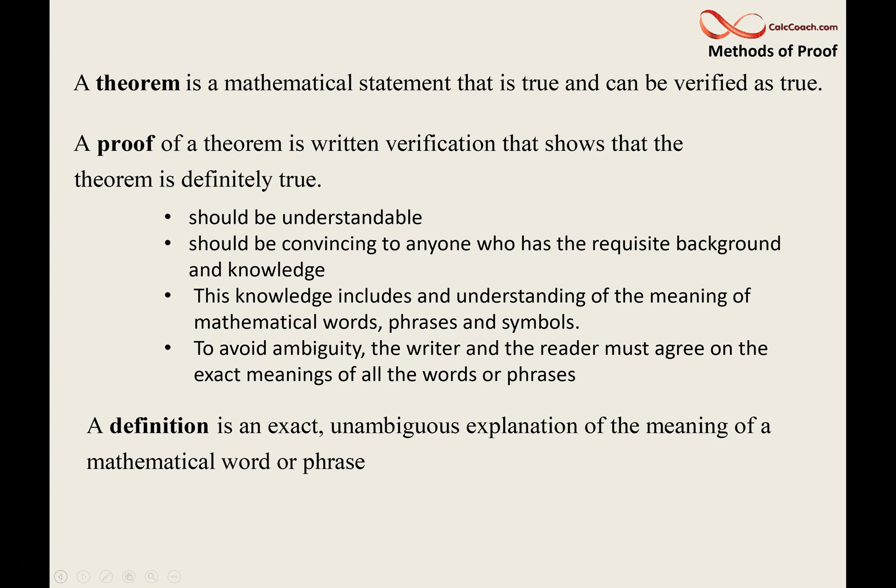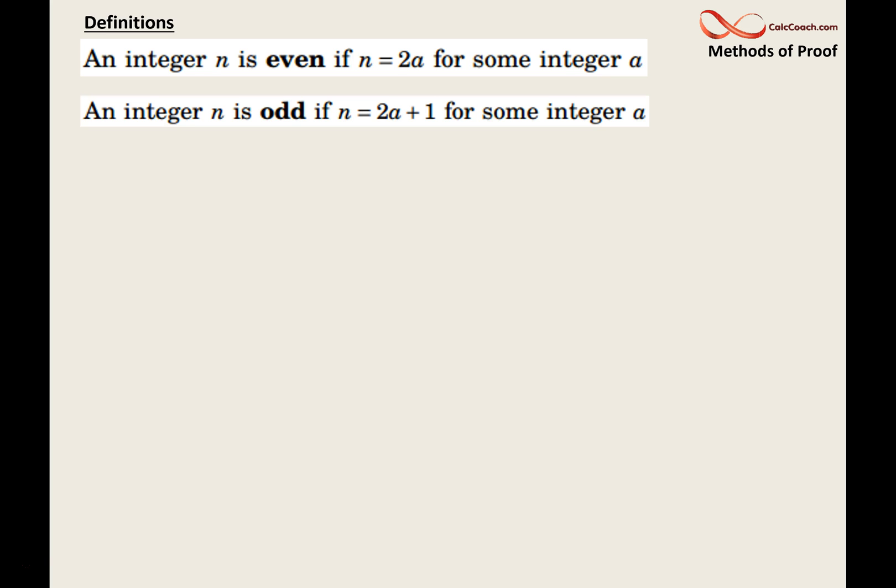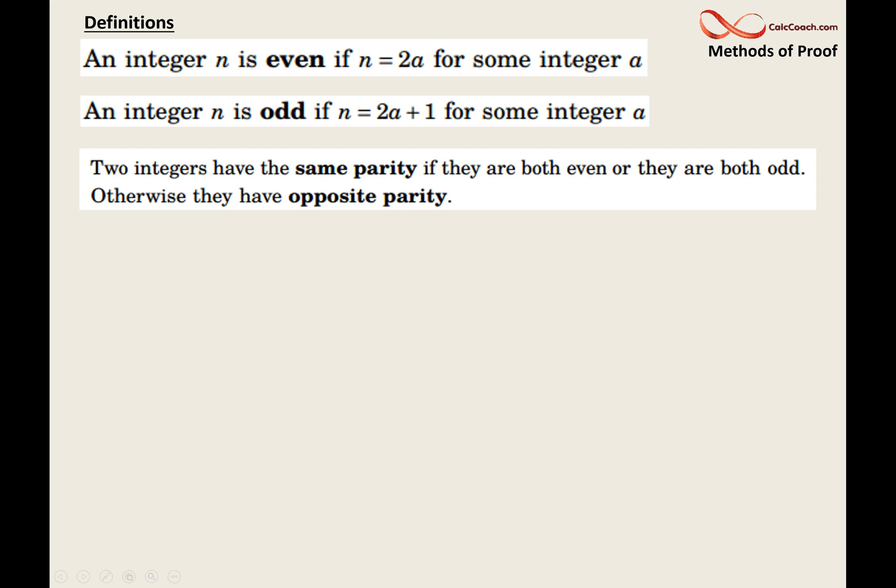Here are some definitions we'll be using in our two examples. What does it mean for an integer to be even? It means it can be written as twice another integer. What does it mean for an integer to be odd? It means it can be written as twice another integer plus one. Parity means if you have the same parity, you're both even or odd. If you have opposite parity, then one's even, one's odd.